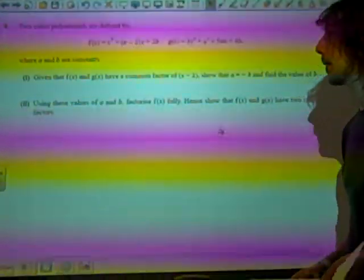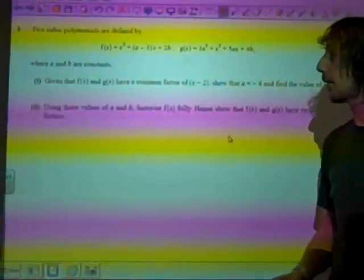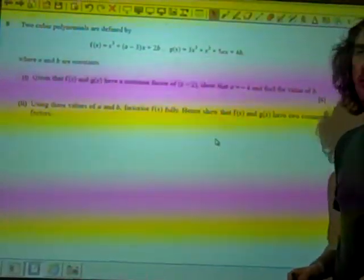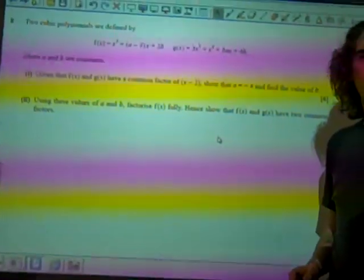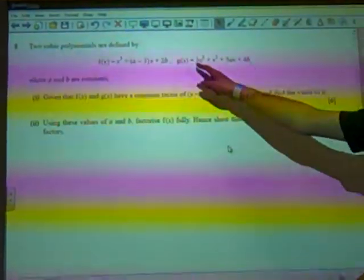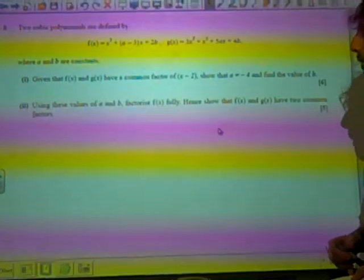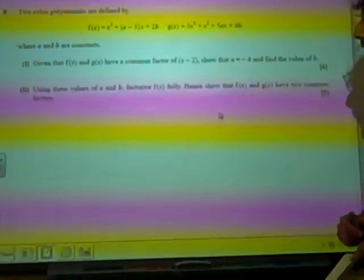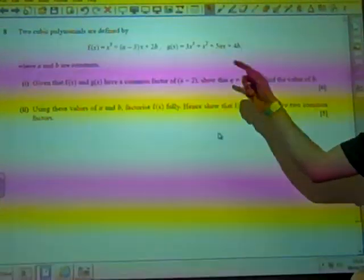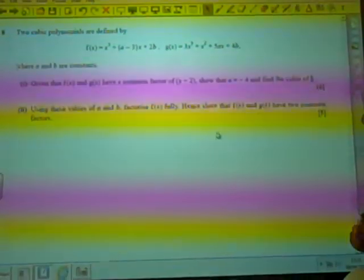What's this red thing on the screen? It's 2b. And g of x is 3x cubed plus x squared plus 5ax plus 4b, where a and b are constants. Given that they have a common factor of x minus 2, show that a is minus 4 and find the value of b.